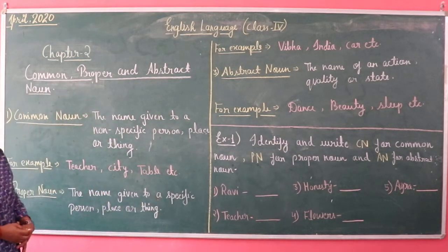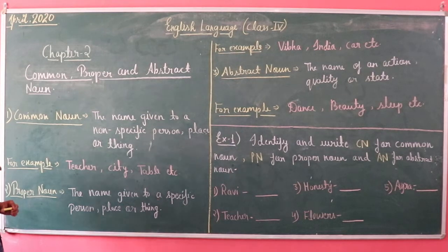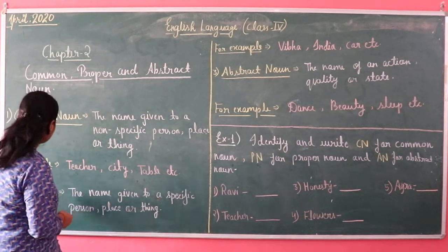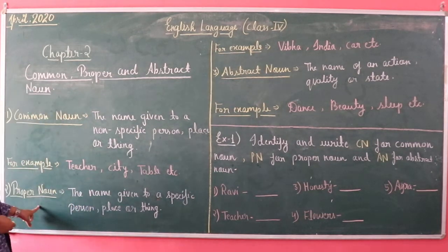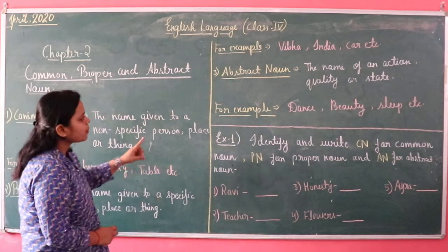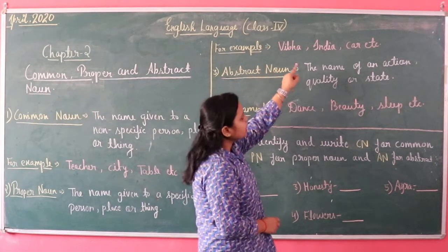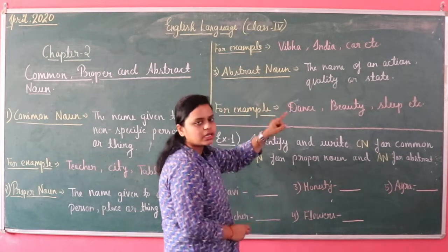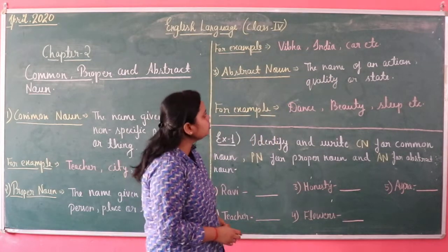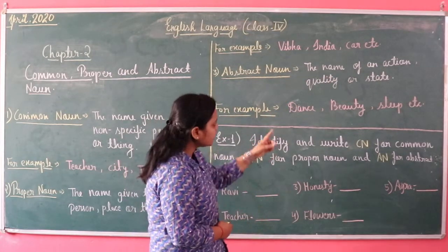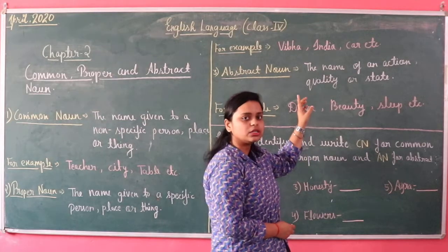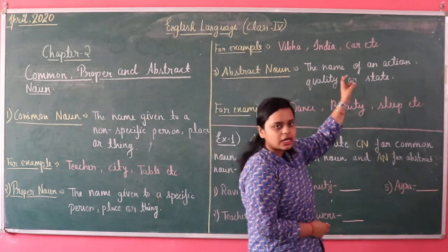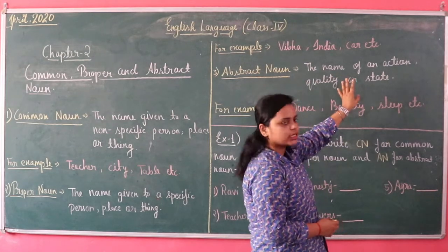The specific term means the name given to a specific person, place, or thing. For example: Viva, India, car, etc. Viva is the specific name for a person. India is the specific name for a place, that is a country. And car is the specific name for a thing.